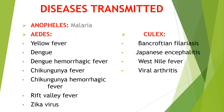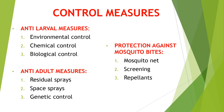Now coming to the diseases transmitted by mosquitoes: the genus Anopheles transmits malaria. Genus Aedes transmits yellow fever, dengue, dengue hemorrhagic fever, chikungunya fever, chikungunya hemorrhagic fever, rift valley fever, and Zika virus. The Culex mosquito is responsible for transmission of Bancroftian filariasis, Japanese encephalitis, West Nile fever, and viral arthritis.